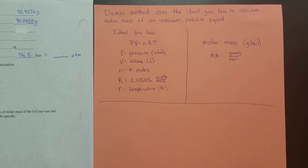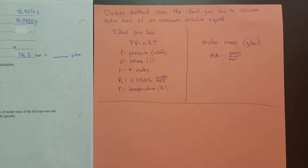The Dumas Method uses the ideal gas law to calculate the molar mass. In order to use the Dumas Method, we need the unknown to be a volatile liquid. When I use the term volatile, I'm talking about a liquid with a very low boiling point, much lower than that of water.